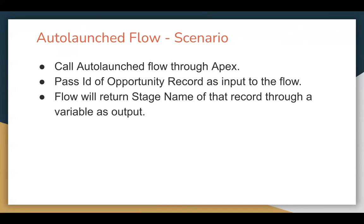I will be calling the auto-launched flow through Apex code. In the flow, we will be receiving the ID of an opportunity record as input. Apex will be passing that ID to the flow, which will fetch the opportunity record and return the stage name back to the Apex class. To accomplish this, I will be implementing auto-launched flow along with writing some Apex code.